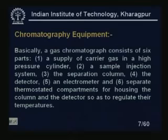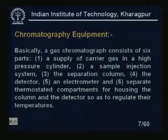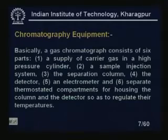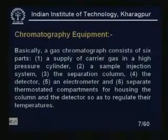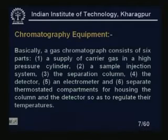A gas chromatograph consists of six parts: a supply of carrier gas in a high-pressure cylinder, a sample injection system, a separation column with packing materials, a detector, an electrometer, and separate thermostatic compartments for the column and detector to regulate their temperatures. The detector is usually followed by a strip chart recorder or electronic recorder where the peak is recorded, and hard copies or computerized plots can be obtained.